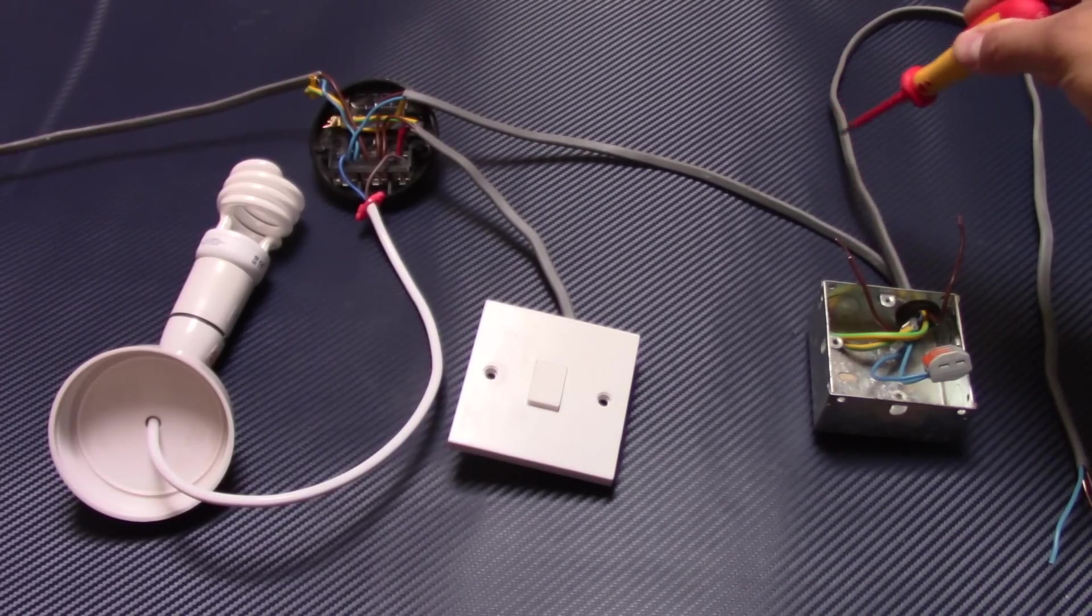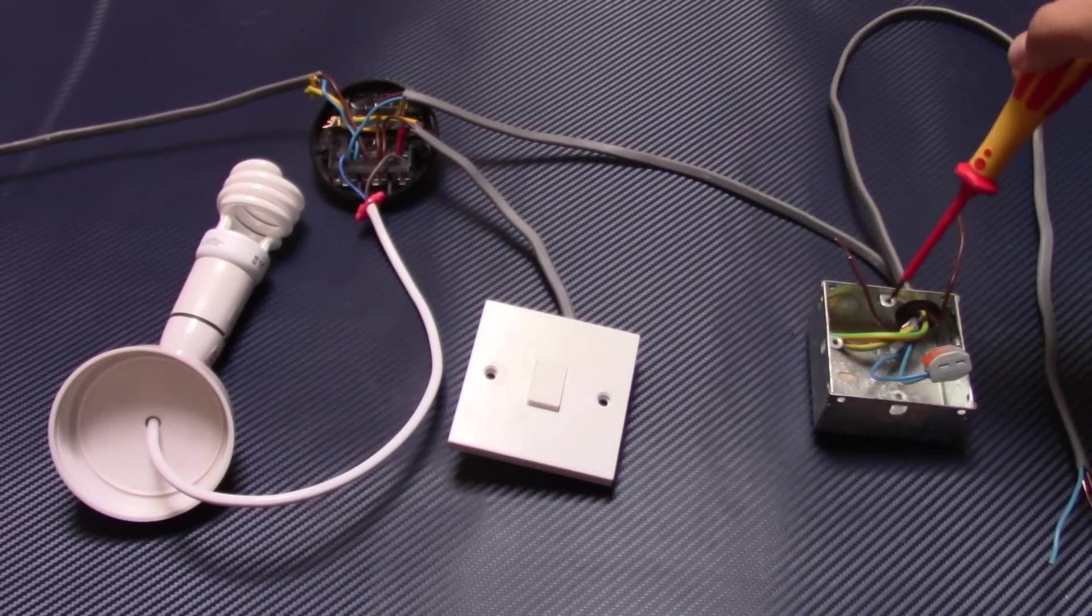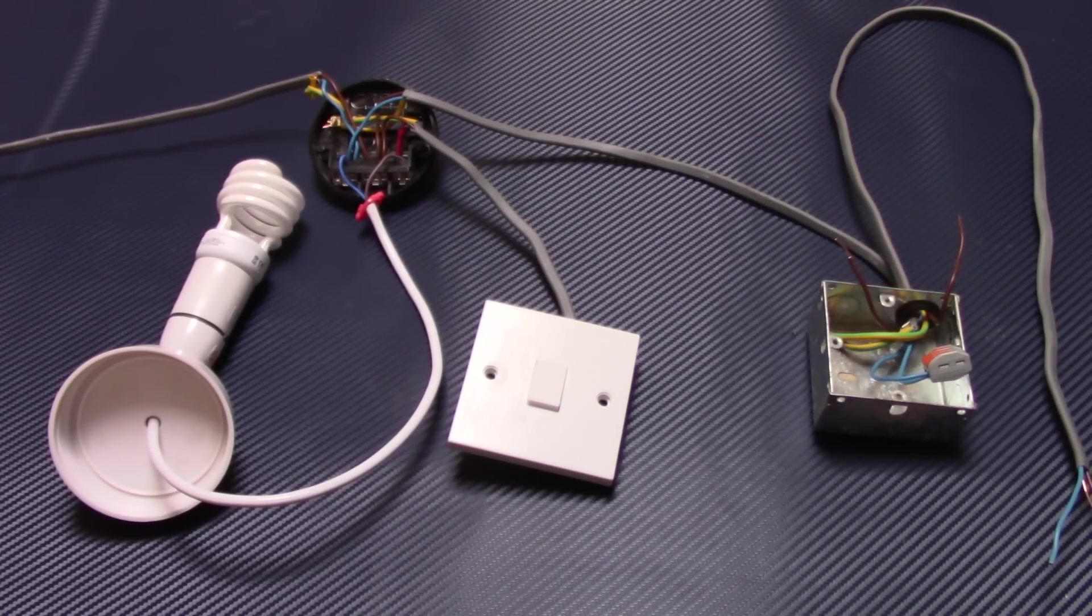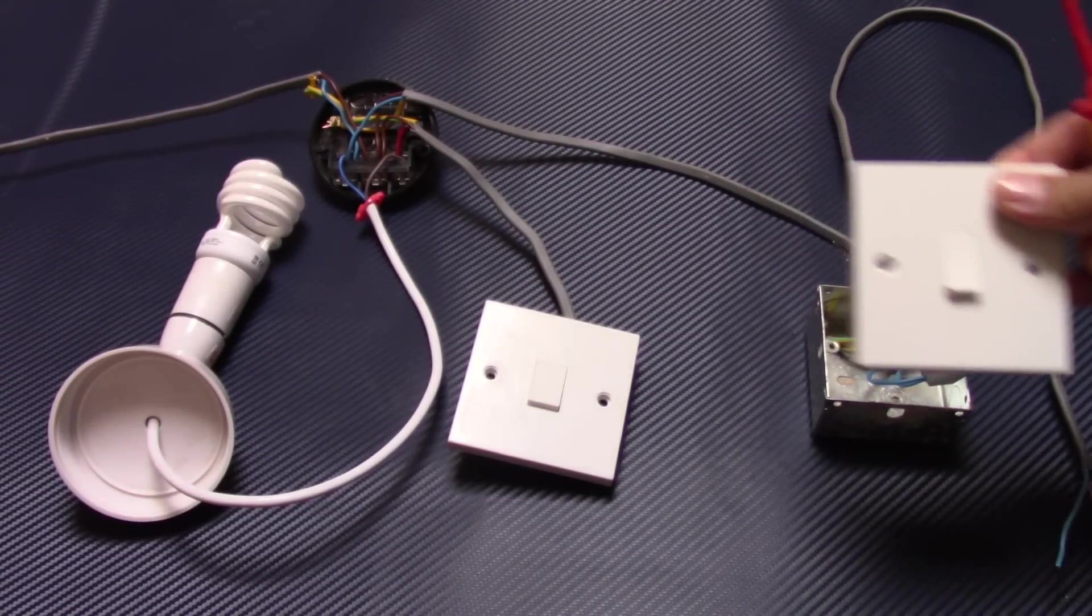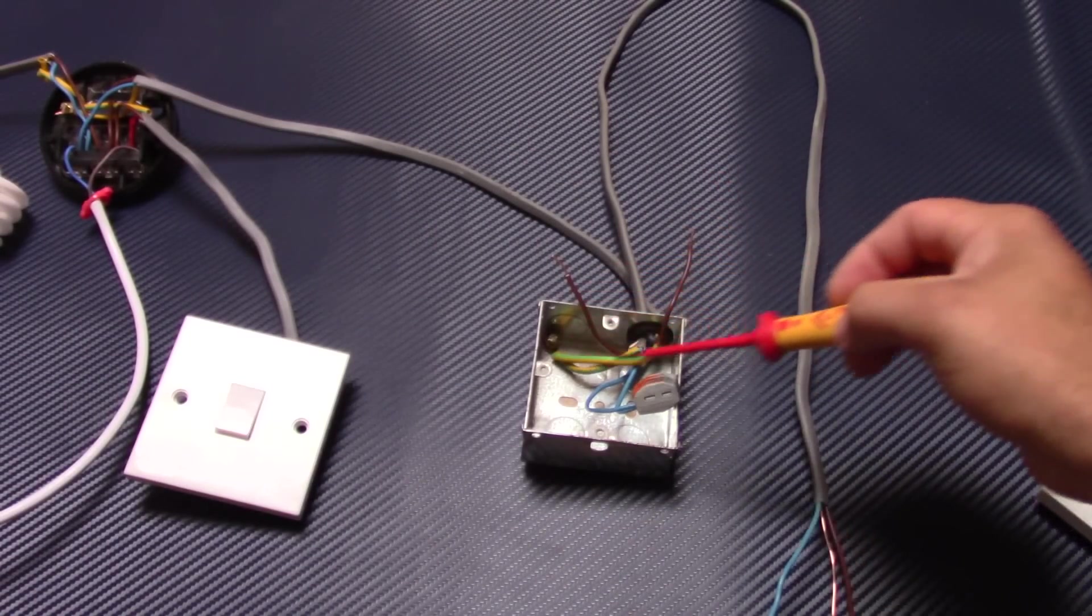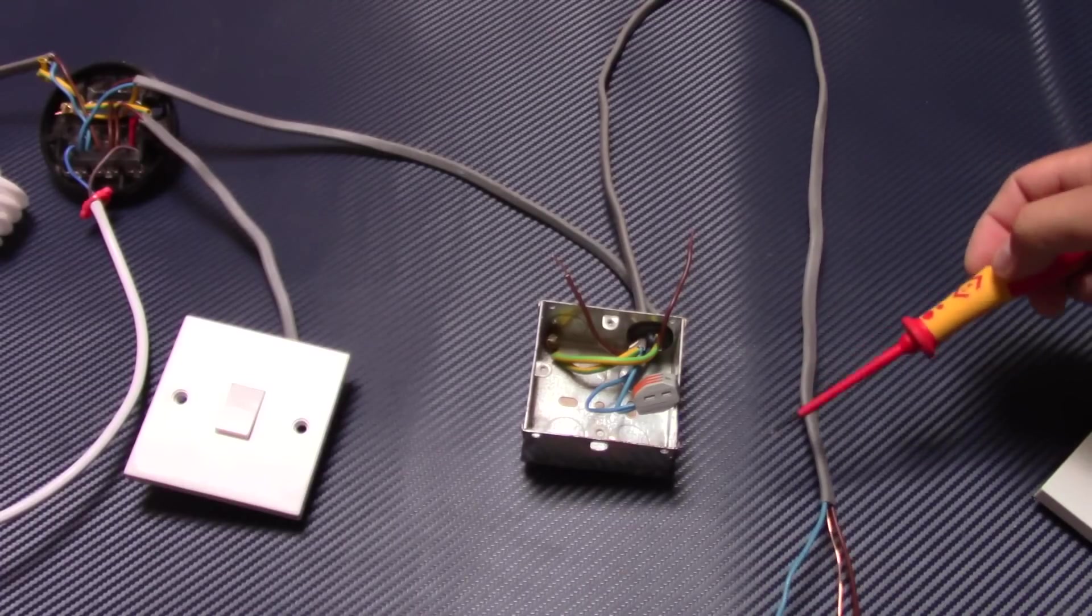But not to the ceiling, it just goes straight to the switch. This is the metal box for the switch, here's the switch. So all the connection is made in the switch and this cable just goes from the switch to the spotlights.